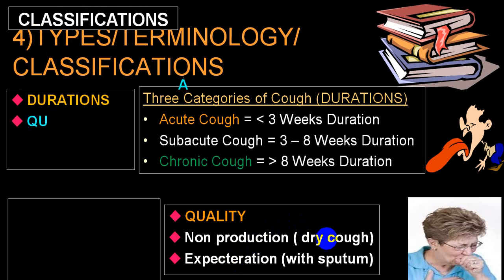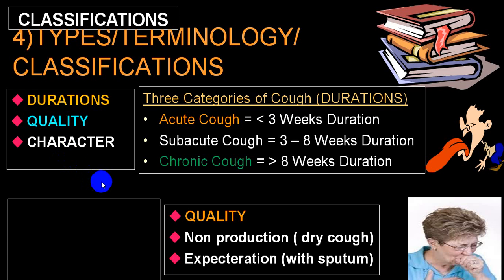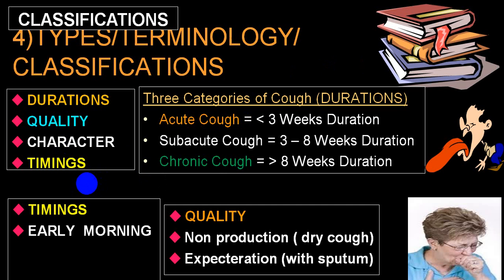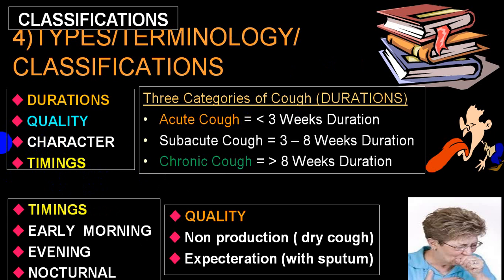Duration-wise, cough is divided into acute, chronic, and subacute varieties. Quality-wise or depending upon character, it can also be classified. Depending upon timing, we can divide into early morning cough, evening cough, nocturnal cough, or cough occurring all throughout the day and night.